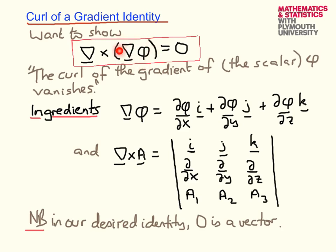Here we have the gradient of a scalar. The gradient is a vector, so we can take the curl of that vector and this vanishes. The curl of the gradient of the scalar field phi vanishes.